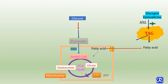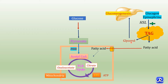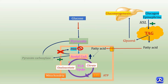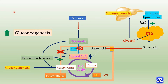In fasting and starvation, increased lipolysis produces glycerol, which is used in gluconeogenesis. Fatty acid oxidation leads to increased acetyl-CoA, which is an allosteric inhibitor of pyruvate dehydrogenase complex, blocking conversion of pyruvate to acetyl-CoA. Additionally, acetyl-CoA is an allosteric activator of pyruvate carboxylase, which converts pyruvate to oxaloacetate. This oxaloacetate is used in gluconeogenesis, resulting in an increased rate of gluconeogenesis.